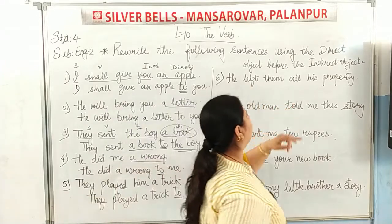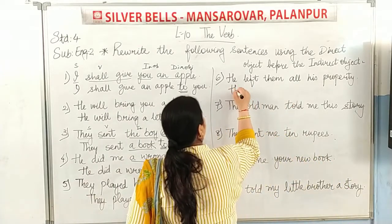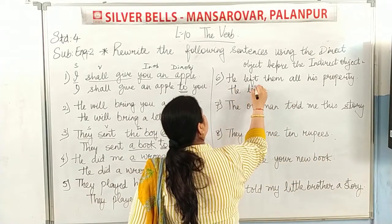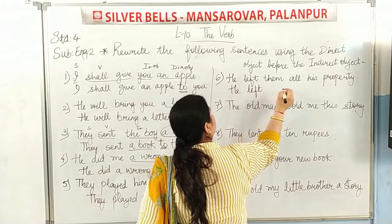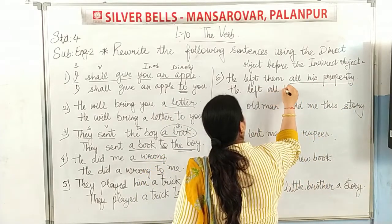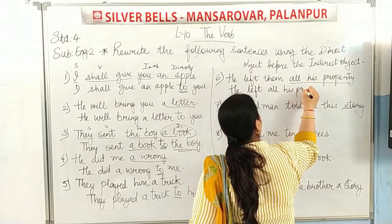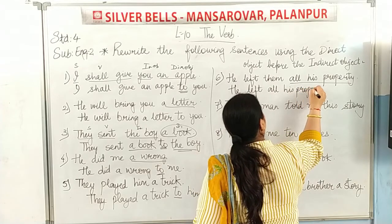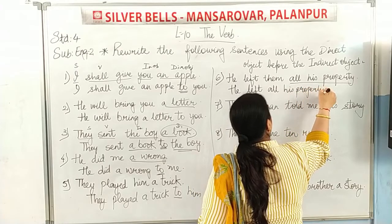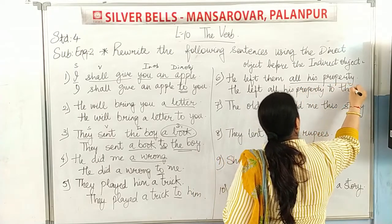'He left them all his property' — so we write: 'He left all his property to them.' By adding 'to,' the indirect object moves to the back.